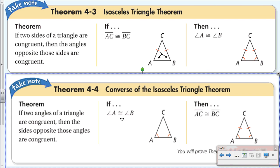The converse says: if two angles of a triangle are congruent, then the sides opposite those angles are congruent. In triangle ABC, angle A is congruent to angle B, which means those two sides are congruent. So the Isosceles Triangle Theorem: two congruent sides means the opposite angles are congruent. The converse: two congruent angles means the opposite sides are congruent. An isosceles triangle has only two congruent sides.